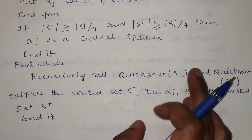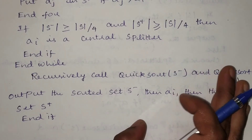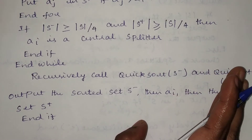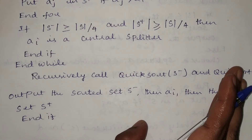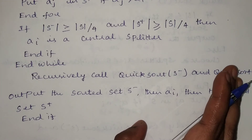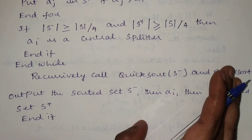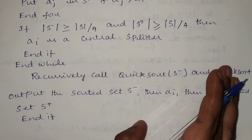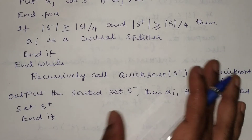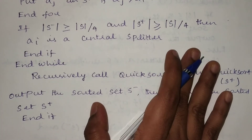If we find a good splitter in the first iteration itself, there is no need to keep searching again and again, which saves time. This reduces the running time of this particular algorithm to O(n log n).